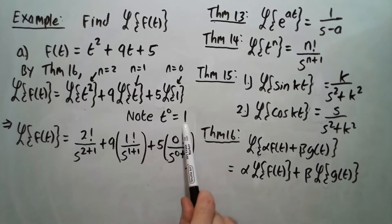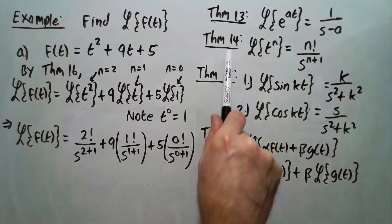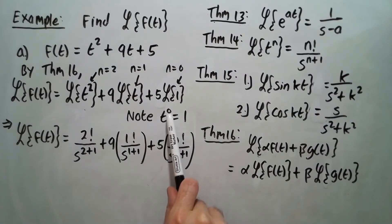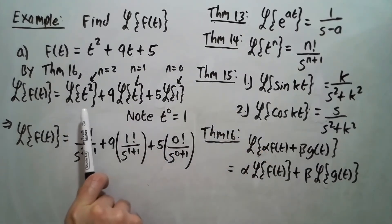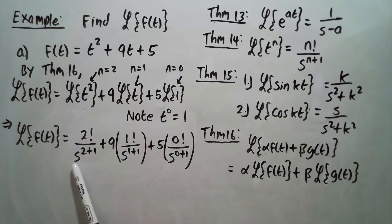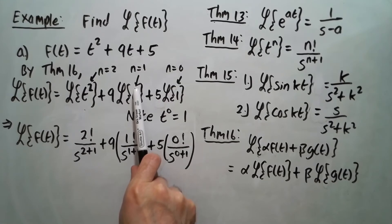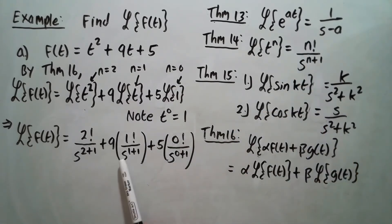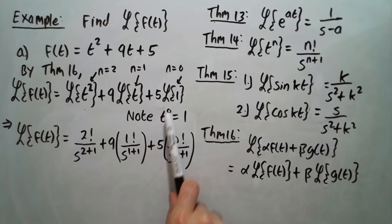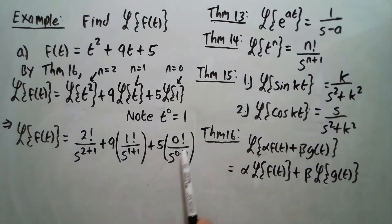Note that t to the 0 is 1, so you can think of the 1 as t to the 0 and use Theorem 14 with n equal to 0. Applying Theorem 14 with n equal to 2 gives 2 factorial over s to the 2 plus 1, which is s cubed. Applying it to Laplace of t with n equal to 1 gives 1 factorial over s to the 1 plus 1, which is s squared. And for Laplace of 1, with n equal to 0, it's 0 factorial over s to the 0 plus 1, which is s.